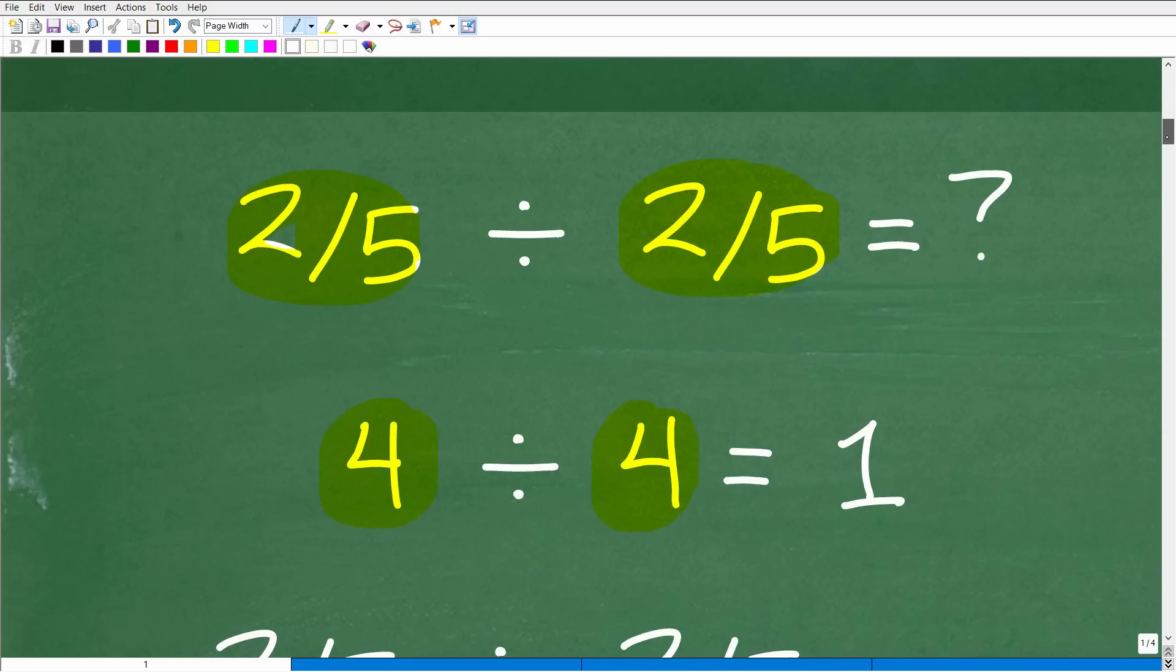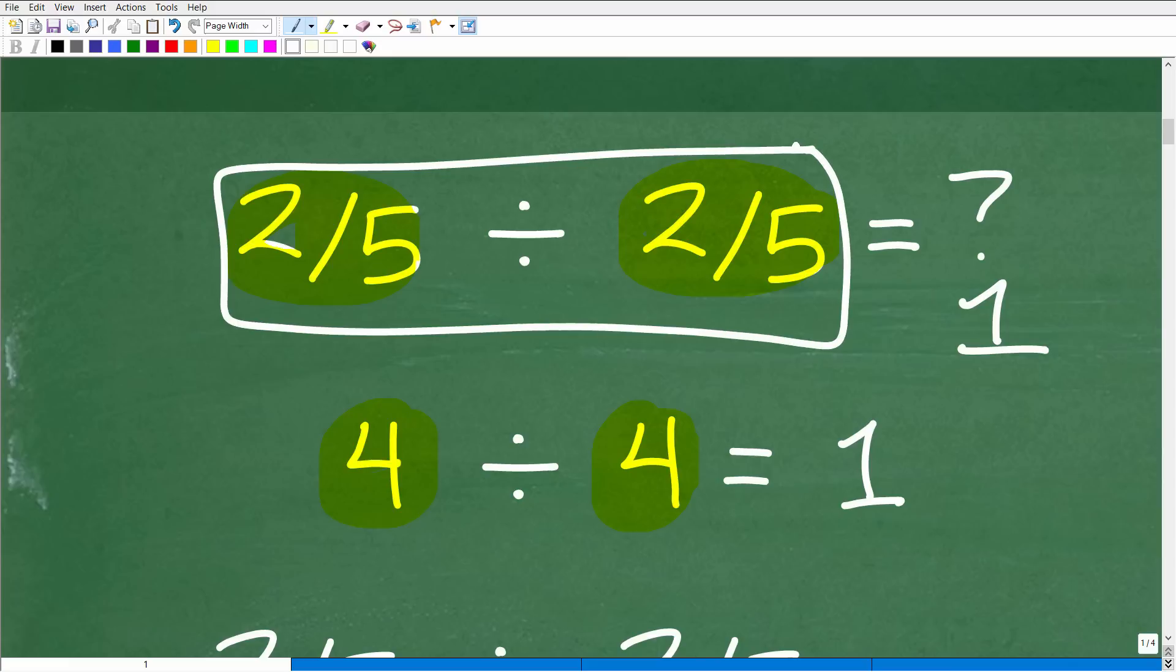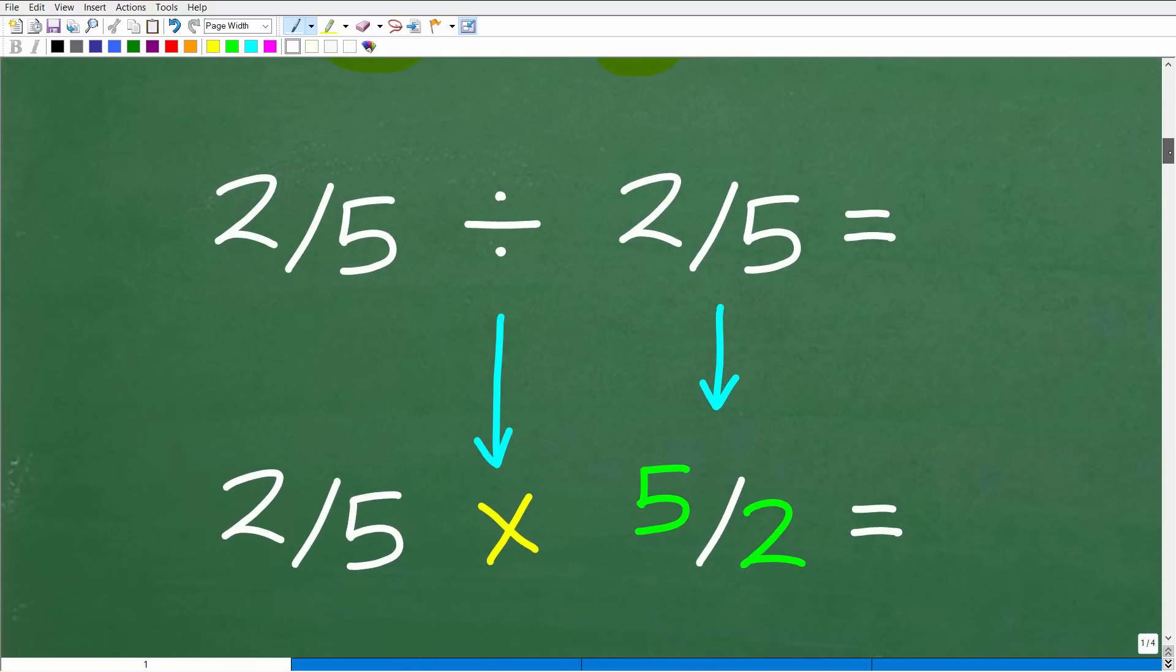Okay, so hopefully that's clear. But the reason why I'm kind of using this real simple example is that we know that 2 fifths divided by 2 fifths, we know the answer has to be 1. So how do we manipulate these fractions in order to get our 1 here, right? Well, we need to review the procedure or the steps to divide fractions. And that's what we're going to do right now.